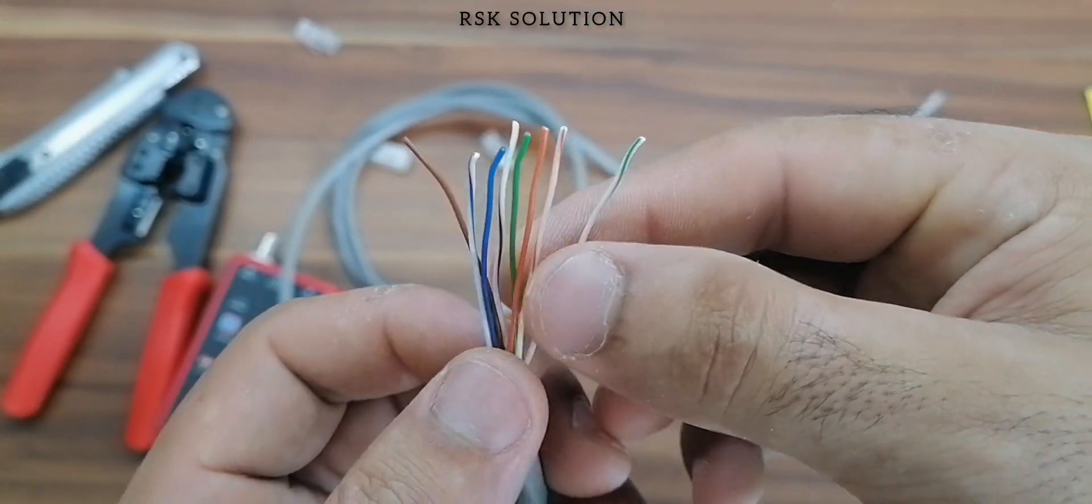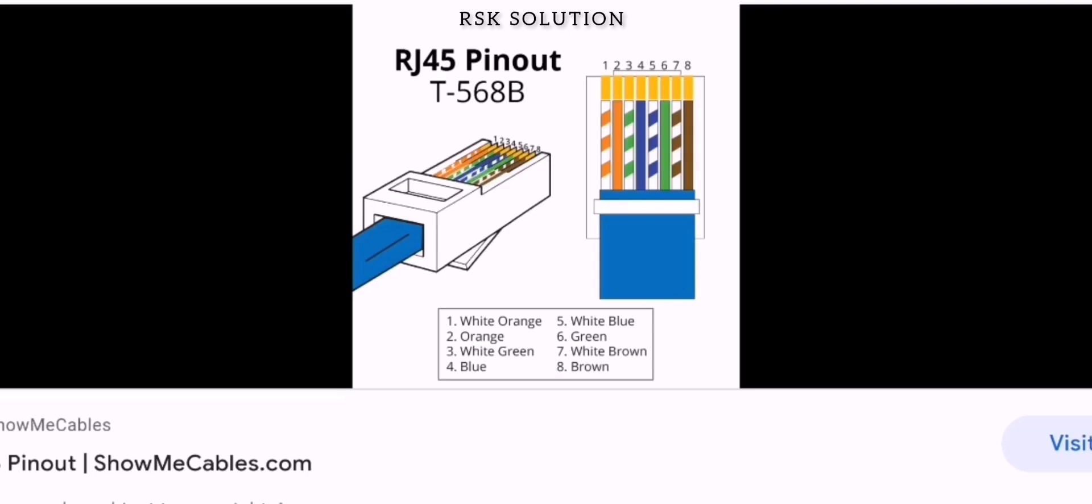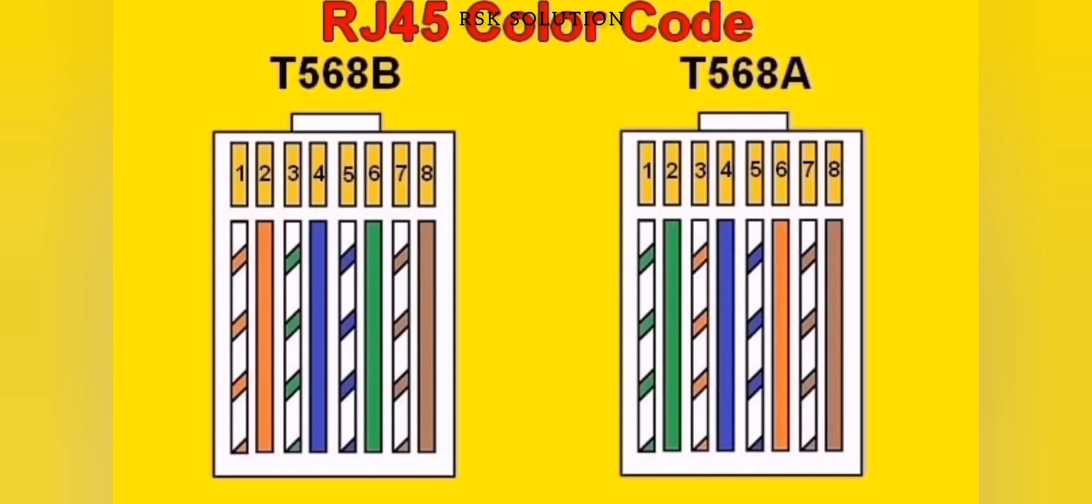All of the wires you need to make them straight and pull them, it will look like this. To make a connection, you need to make them in the sequence. If you don't know you can check by Google, there are two types, T568B, T568A. Now I am going to make it A model.